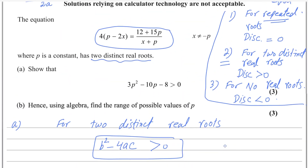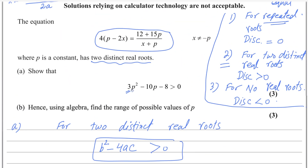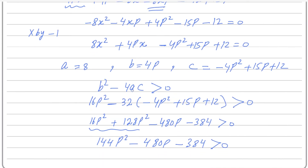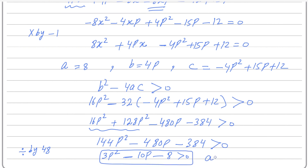Going back to the question, we want p squared with a coefficient of 3. Since 144 divided by 3 is 48, we divide every term by 48. Dividing gives 3p squared; 480 divided by 48 gives 10p; and 384 divided by 48 gives 8. So 3p squared minus 10p minus 8 is greater than 0. This is the required result.